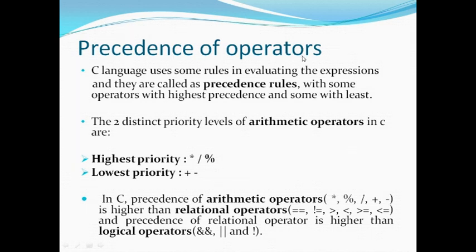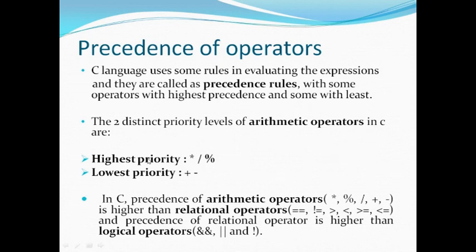Precedence of operators: C language uses rules in evaluating expressions called precedence rules, with some operators having the highest precedence and some the least. There are two distinct priority levels of arithmetic operators in C. The arithmetic operators are plus, minus, star, slash, and modulo. Among these, star, slash, and modulo have the highest preference, whereas plus and minus have the lowest. In C, precedence of arithmetic operators is higher than relational operators, and precedence of relational operators is higher than logical operators.